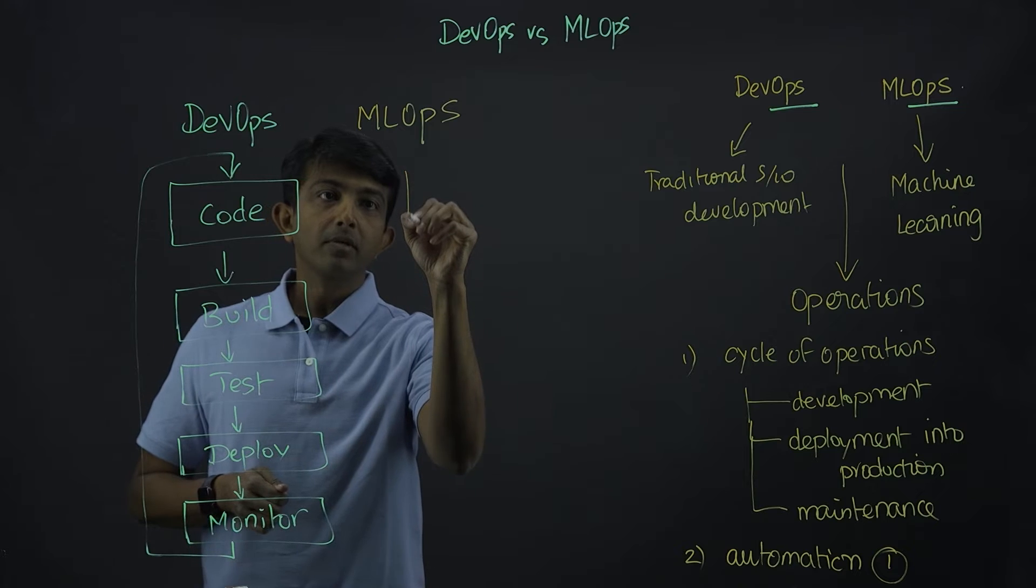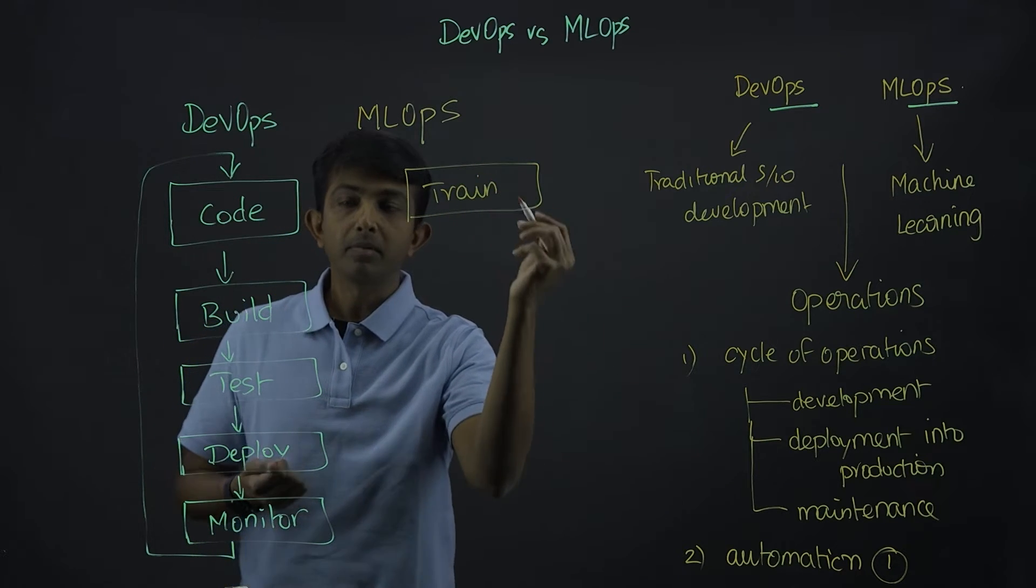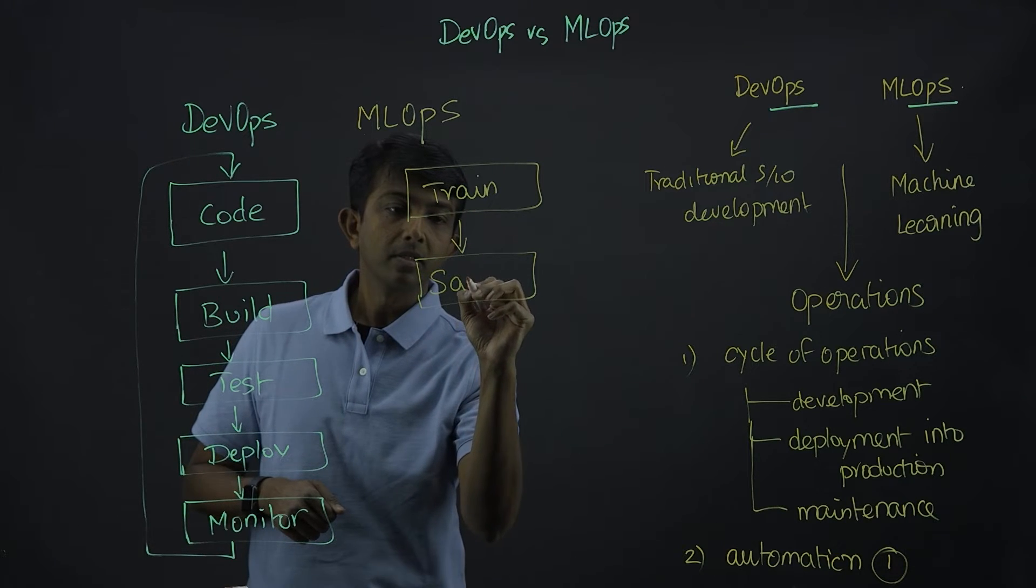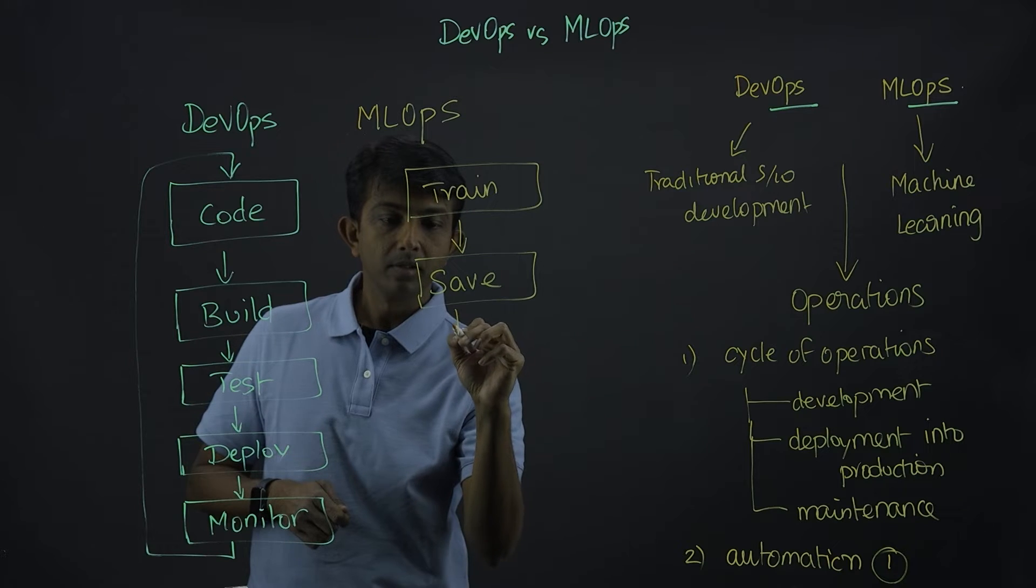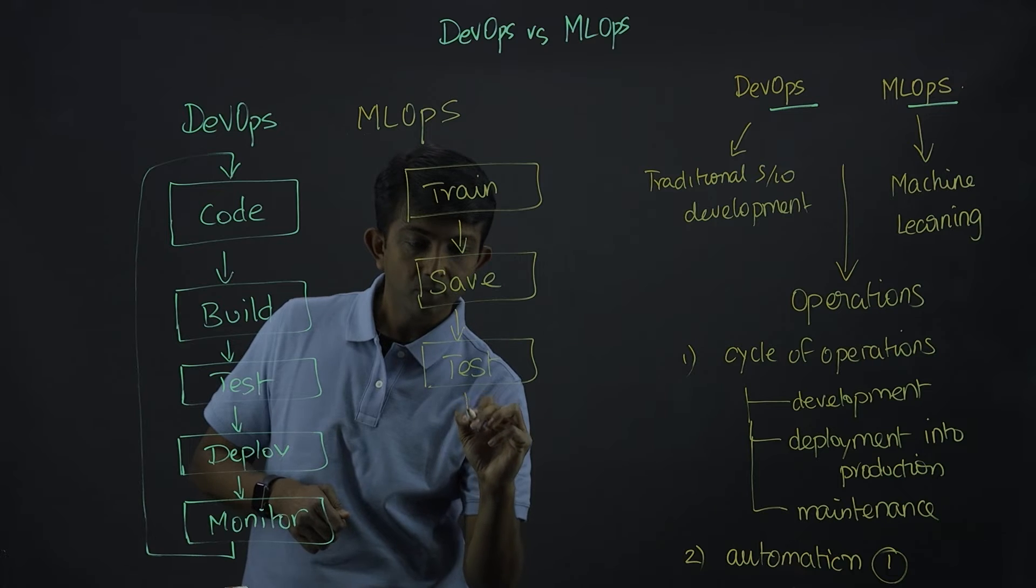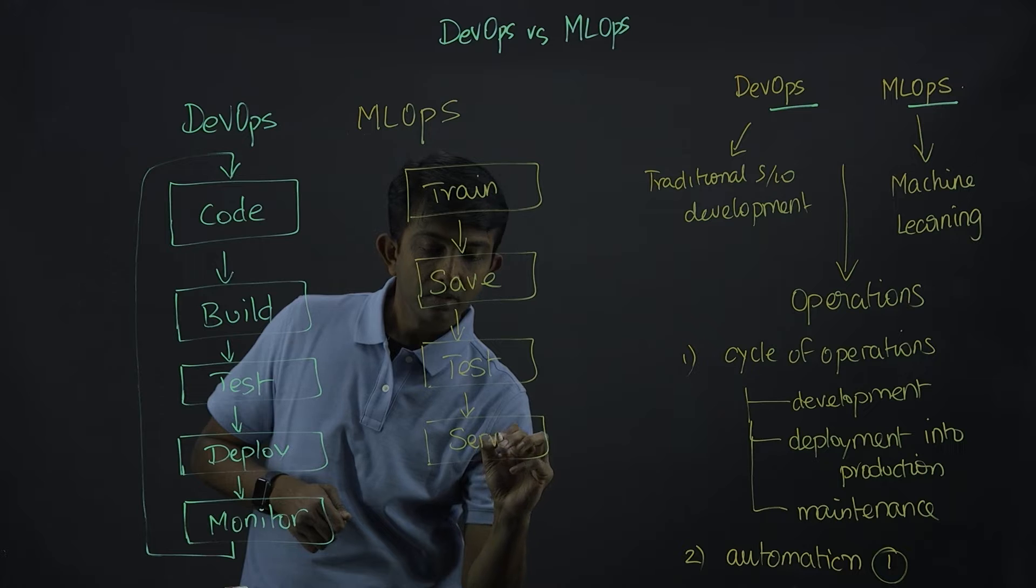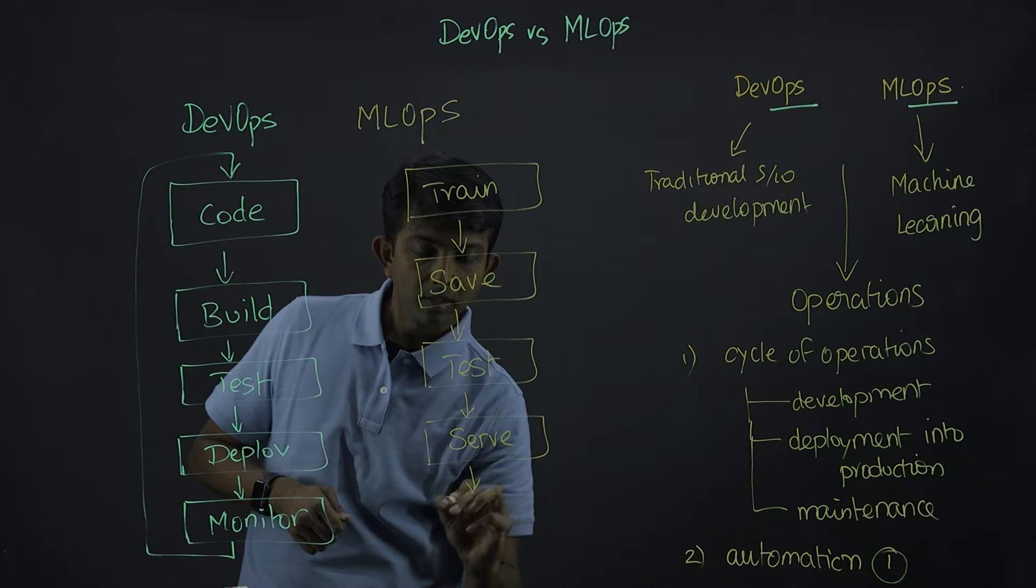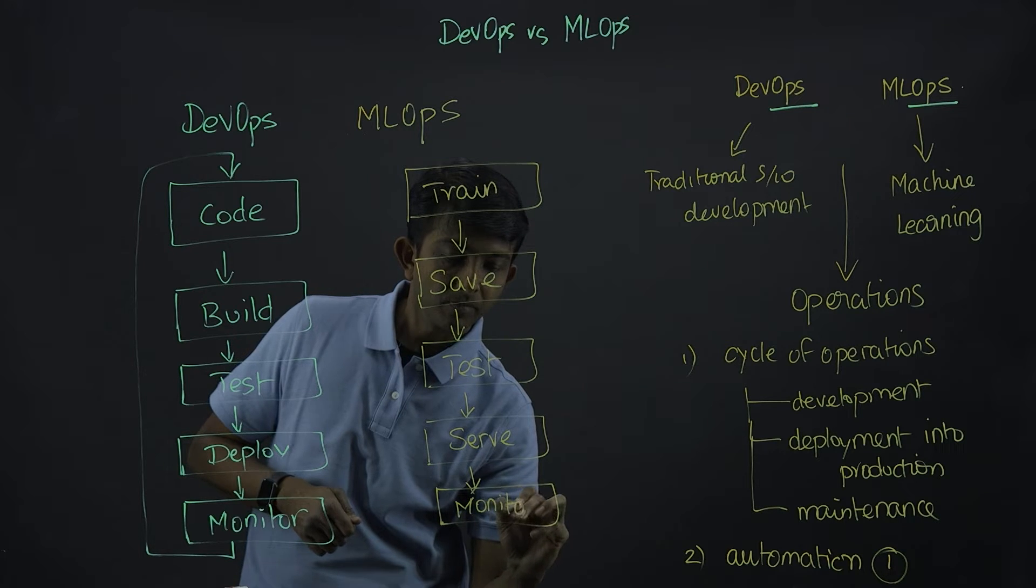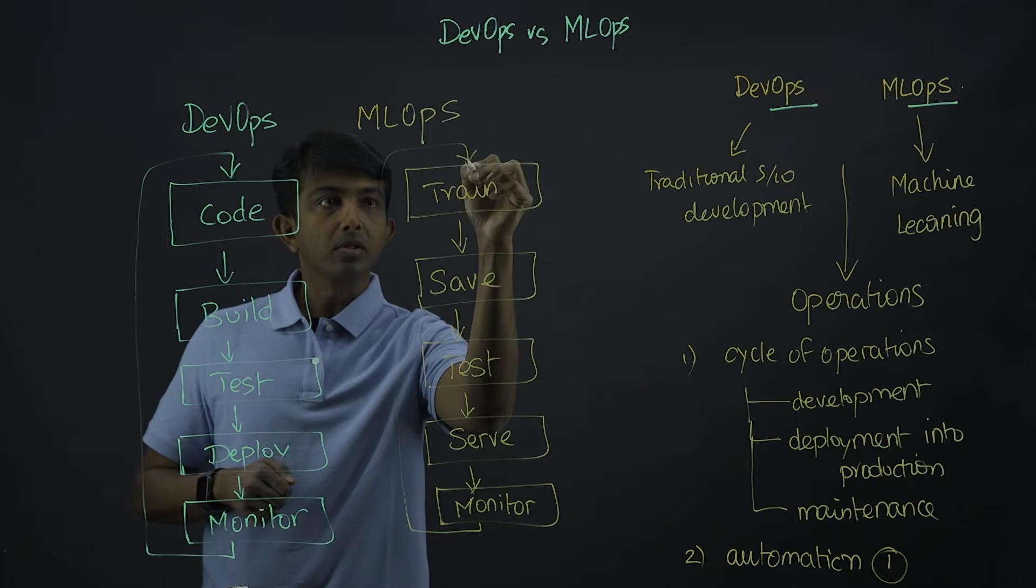Now, with MLOps, you go into a train. It's like building and training a machine learning model. And then, you go to serving the model. Then, test the model before you roll it out into production. And then, you serve the model, and then you monitor it. And just like DevOps, this goes on in a loop.